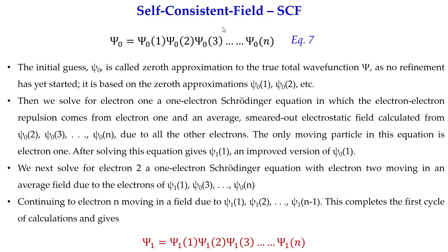We will now see where 'self-consistent' comes from. After solving for psi_0(1), we obtain an improved psi_1(1). Next, we solve for psi_0(2), assuming electron 2 moves in the field of all other electrons except electron 2, obtaining psi_1(2). Repeating this process for all one-electron wave functions, we complete one full cycle and arrive at the improved total wave function psi_1 = psi_1(1) · psi_1(2) · psi_1(3) · … · psi_1(N). This completes one cycle and gives us an improved wave function psi_1.